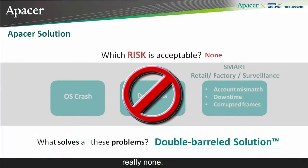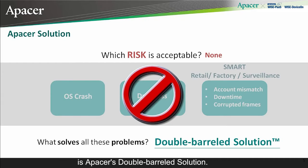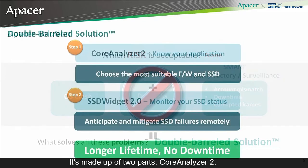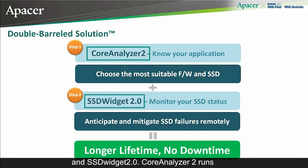What risk is acceptable? The answer is really none. So how do we solve these problems? The answer is APACER's double-barreled solution, made up of two parts: Core Analyzer 2 and SSD Widget 2.0.